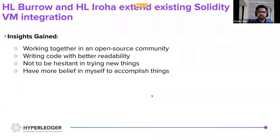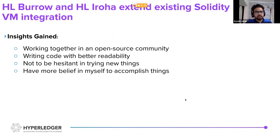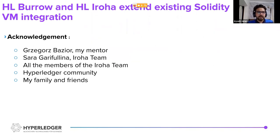It was my first experience working in an open source community, so I learned a lot working with everyone. I learned how to write better code with better readability, as I'm not the only one using my code — everyone else is sharing it, learning from it, and can use it to create better things. In the beginning of my mentorship period, I was a bit hesitant in trying new things and wasn't always sure if things could be done. I learned to always have more belief in myself to accomplish more things and go forward. I would like to thank my mentor for his support, Sara from the Iroha team who helped me during the documentation, all the members of the Iroha team who were constantly there to clear my doubts, the Hyperledger community for providing me this mentorship opportunity, and also my friends and family who provided me an environment in which I could work easily.